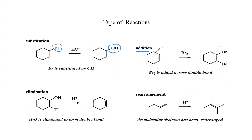Addition reaction is usually applied where we have an unsaturated compound — for example, a compound with a double bond. The presence of a double bond indicates the compound is unsaturated, so it can accommodate more atoms. In a double bond, one bond is pi and the other is sigma. In addition reaction, one pi bond is broken and two sigma bonds are created.